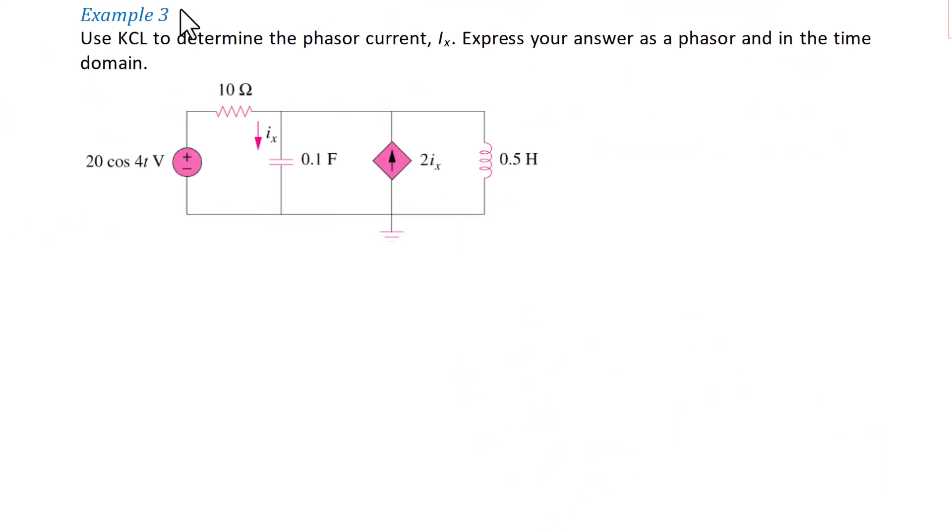Example 3. Use KCL to determine the phasor current IX. Express your answer as a phasor and in the time domain. So we are given a circuit here in the time domain with a source 20 cosine 4t and a current controlled current source 2IX.